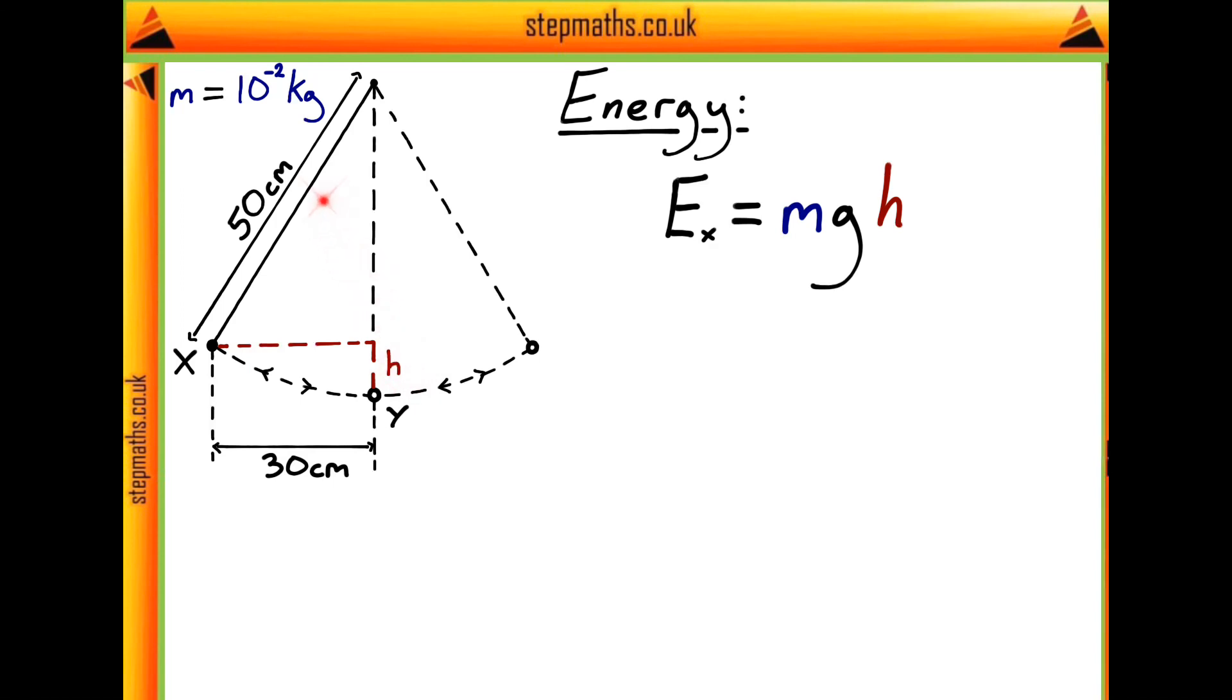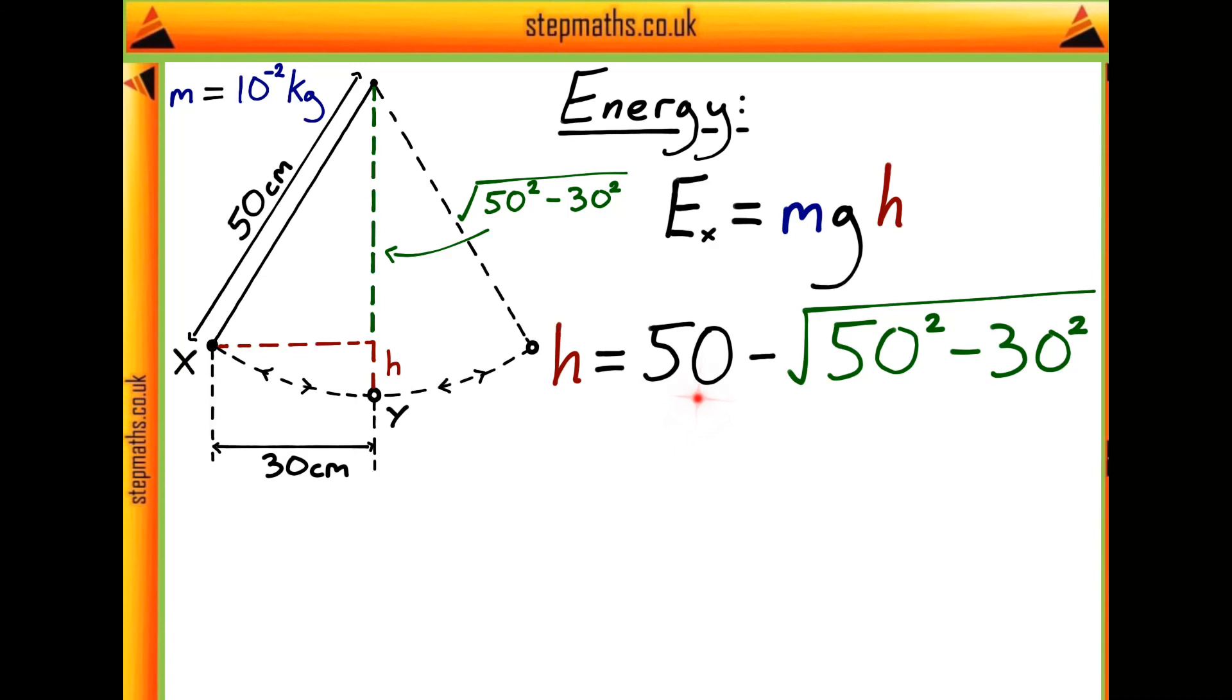Now, to do this, we can use our triangle of 50 centimetres by 30 centimetres. And with Pythagoras, we get that this distance is equal to this here. So therefore, we can say that h is going to be equal to 50 centimetres take away this distance given here.